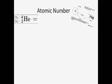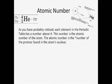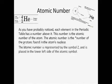The atomic number. As you have probably noticed, each element in the periodic table has a number above it. This number is the atomic number of the atom. The atomic number is the number of protons found in the atom's nucleus. The atomic number is represented by the letter Z and is placed in the lower left side of the atomic symbol.